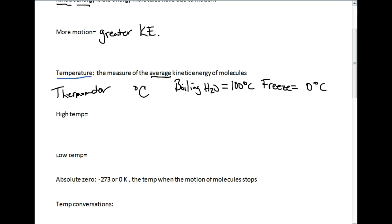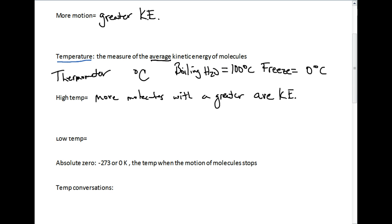Although soon we'll find out that there's another unit that we use as well. Now, what does temperature mean if we have a high temperature? High temperature tells us that we have more molecules with a greater average kinetic energy. So lots and lots of molecules moving really fast means we have a higher temperature. And a lower temperature is the opposite. We have more molecules with a lesser average kinetic energy.